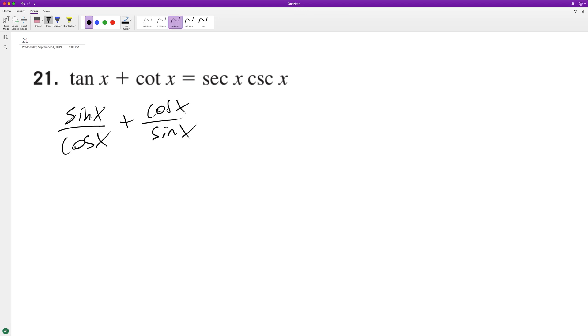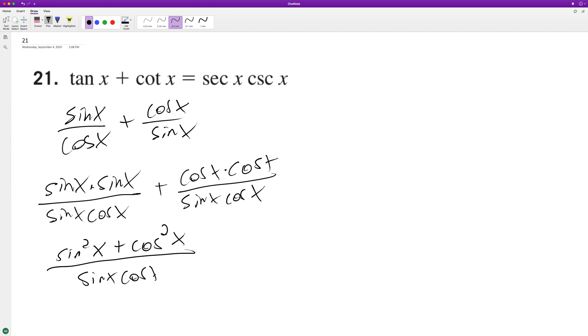All right, so next, what we're going to do is get a common denominator. So we end up with sine X times sine X in order to get this to equal sine of X cosine of X, plus cosine of X times cosine of X to get this equal to sine of X cosine of X. So this ends up being sine squared X plus cosine squared X all over sine X cosine X.